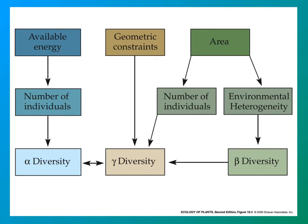The three kinds of diversity: alpha diversity is simply the number of species present, and the number of individuals in those species is influenced by the energy available. Gamma diversity is regional diversity — all local diversity added up to give global or regional diversity. Beta diversity depends on environmental heterogeneity, or how species change as you move from one local site to another, and is sometimes called turnover.